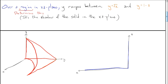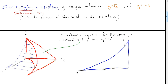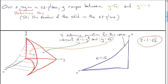Drawing the xz plane with the x axis pointing leftward, we have two blue boundary lines and a curve. To determine that curve, we intersect the surface z equals 1 minus y and the surface y equals root x. Setting y equals root x and z equals 1 minus y gives z equals 1 minus root x. That's the equation of the boundary curve.